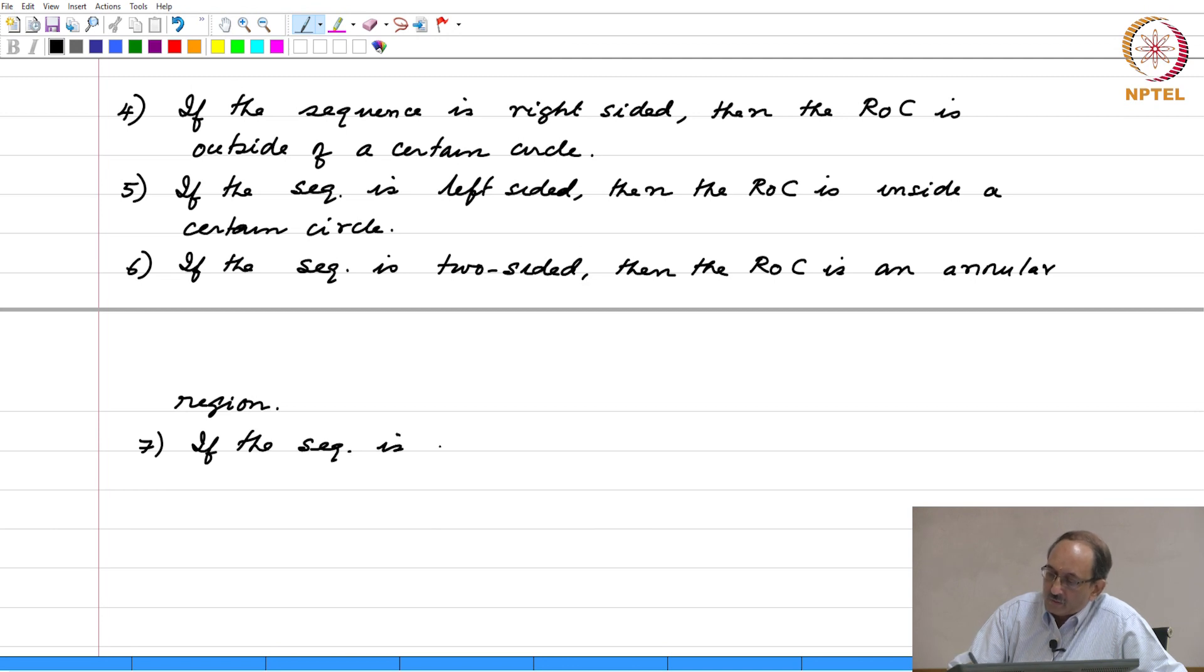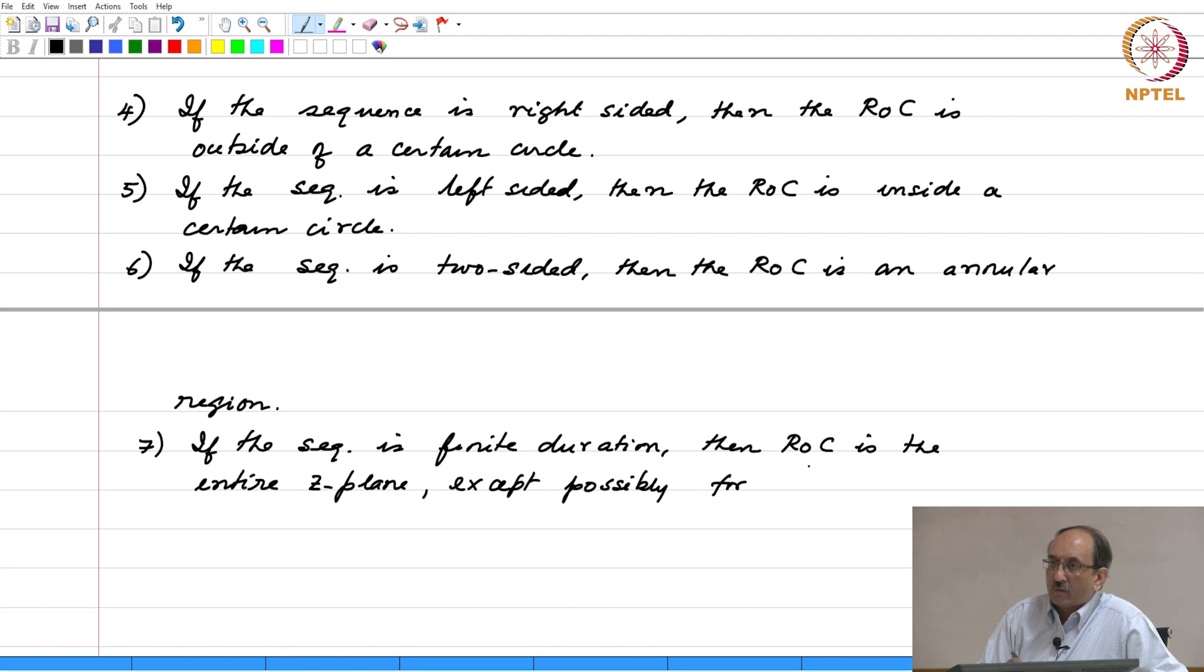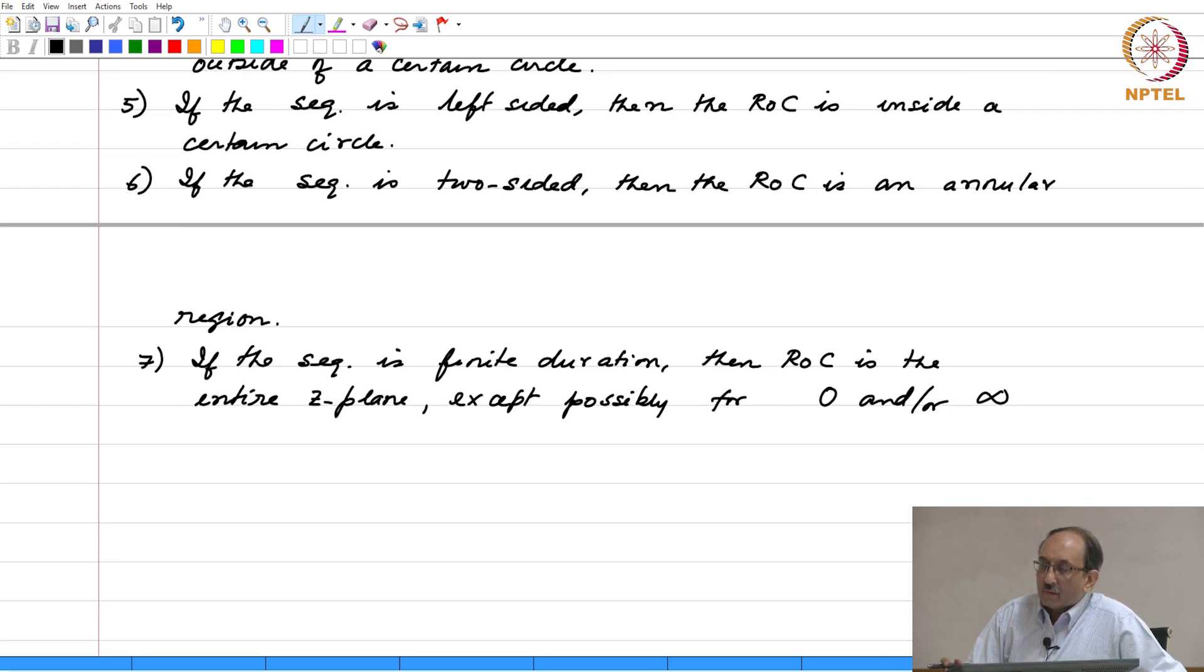If the sequence is finite duration, then the ROC is the entire z plane except possibly for 0 and or infinity. On the other hand, if you had a continuous time function that is absolutely integrable, that is finite duration, the ROC is the entire z plane.